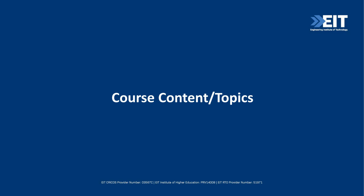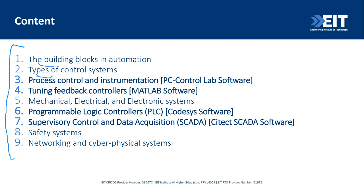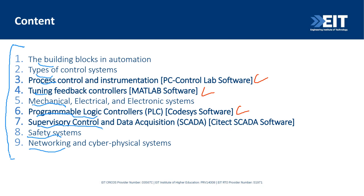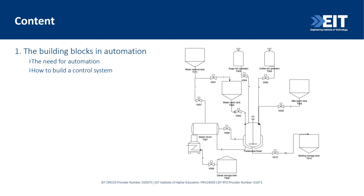Let's take a rapid overview of what is covered in this course. We cover: the building blocks of automation, types of automation and control systems, process control and instrumentation, tuning of controllers, mechanical, electrical and electronic systems, programmable logic controllers, supervisory control and data acquisition (SCADA) systems, safety systems, and networking and cyber-physical systems. The highlighted topics are ones where we'll be seeing software demonstrations today — I'll spend a few minutes showing you these software tools.